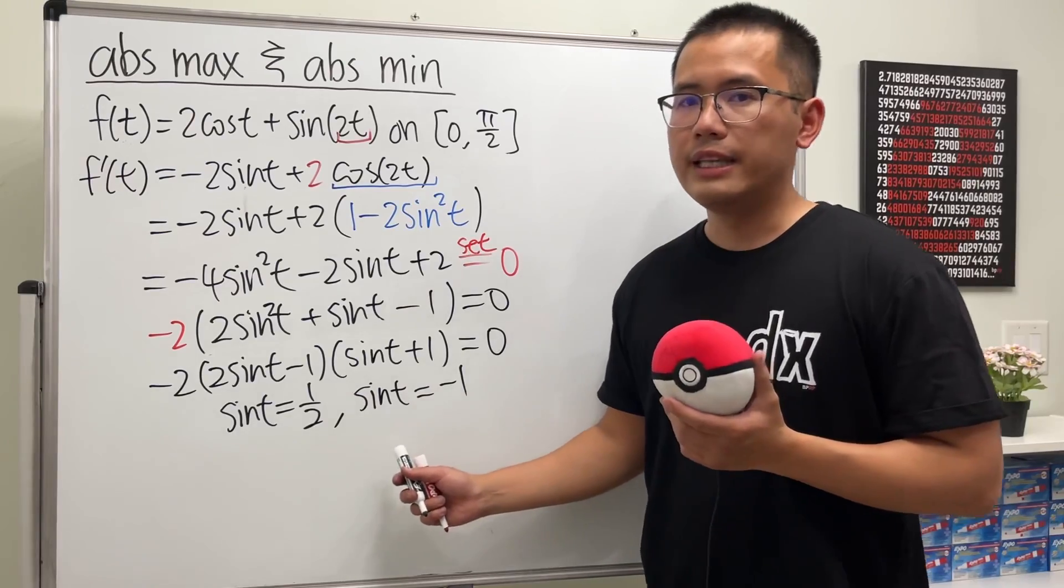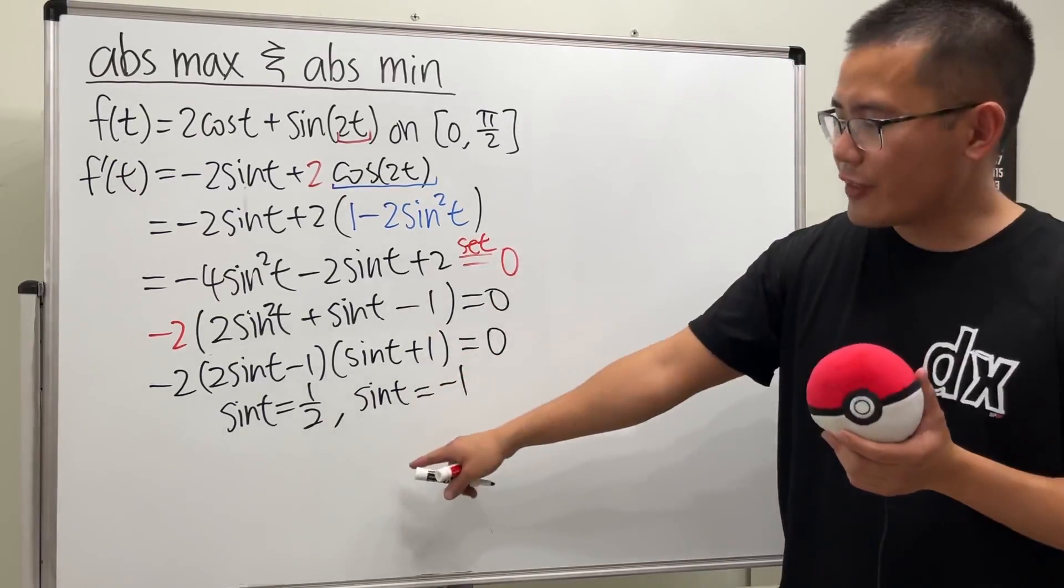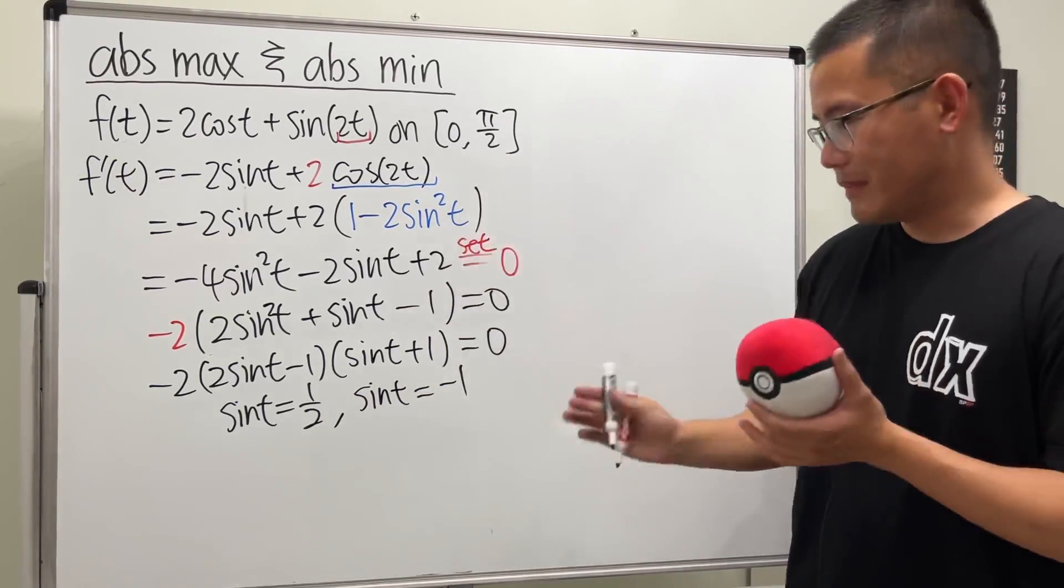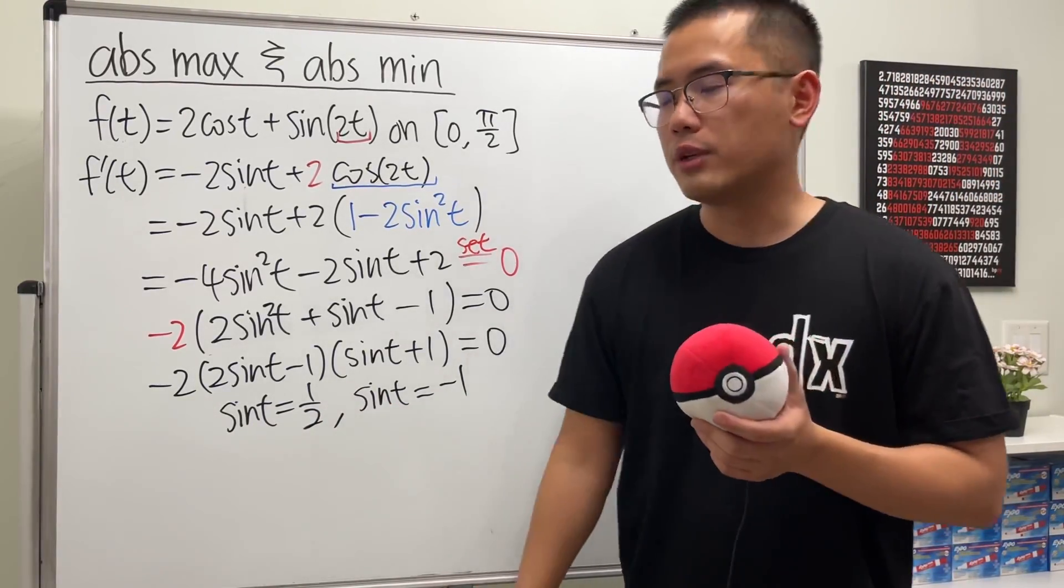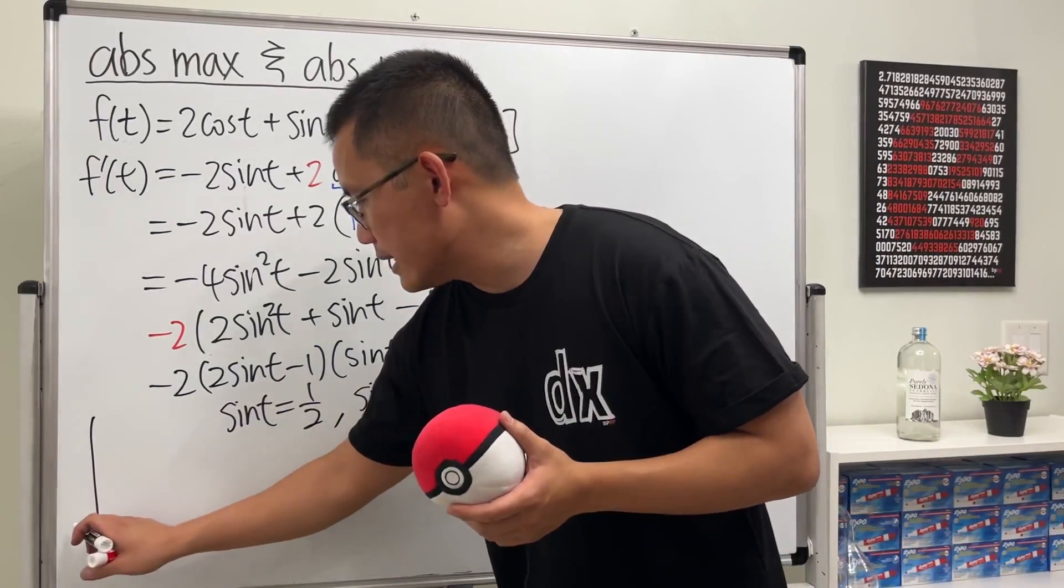And now, we just have to solve these two equations. And the good news is that we just have to solve them on this interval. Have a look. So sin(t) being equal to 1/2, we can use the reference triangle method. And I will remind you guys that on the side.